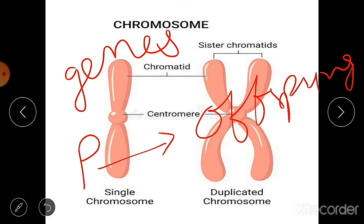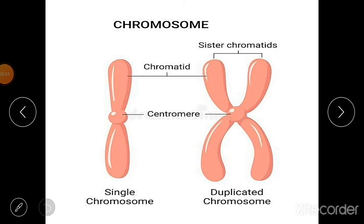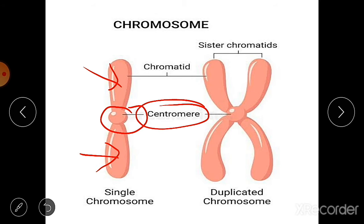Most chromosomes consist of two arms extending from a specialized region called the centromere, which gives the chromosome its particular shape due to its position. The terminal regions on either side of the arms are called telomeres, and the central part is called the centromere.